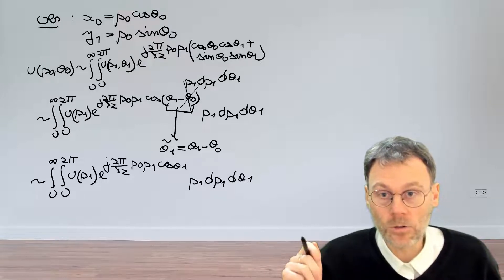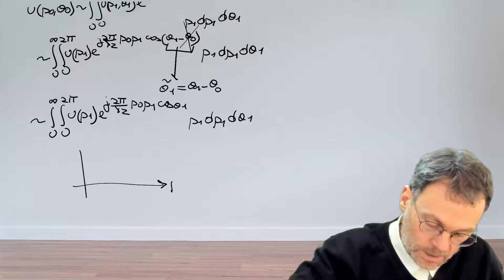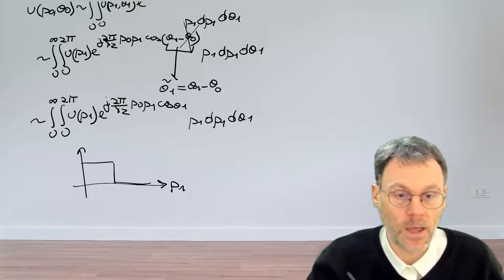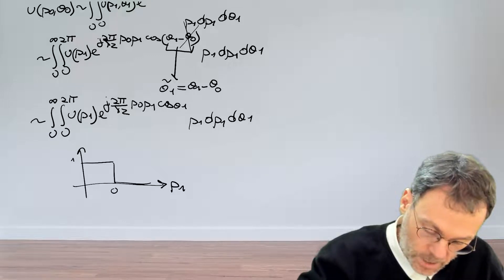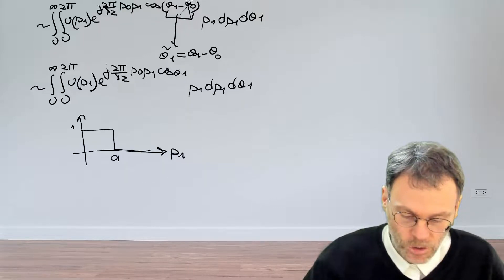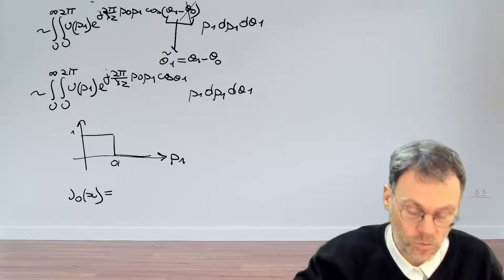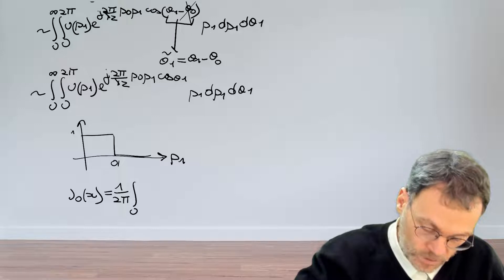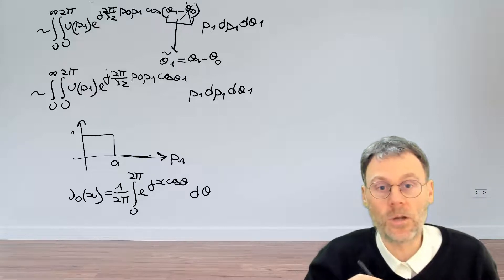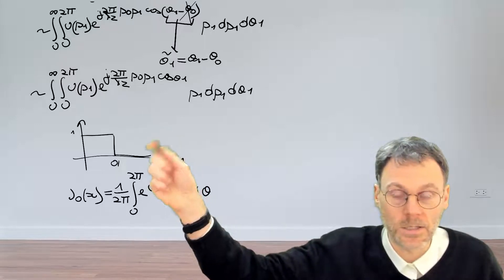Now we introduce an abrupt aperture. For our disk-shaped aperture, u as a function of ρ₁ equals 1 inside the aperture and drops to 0 at radius a. Also recall from a previous exercise that J₀(x) = (1/2π) ∫₀²π exp(jx cos θ) dθ. Pause the video and try to use that to simplify the integral.